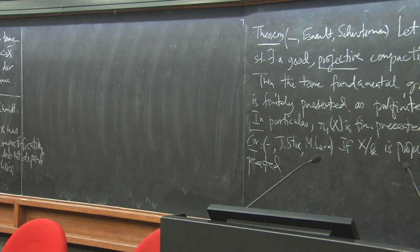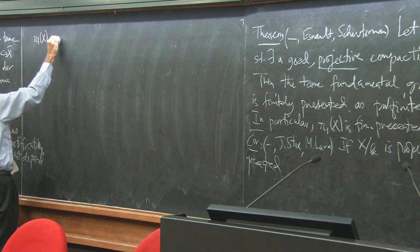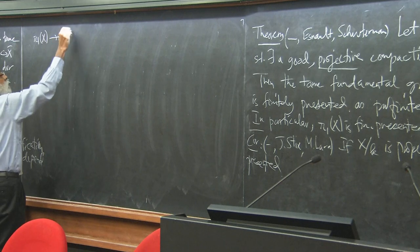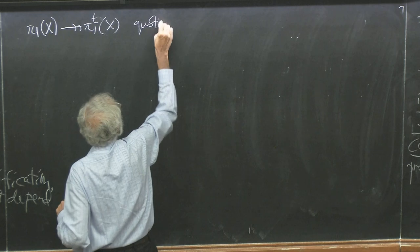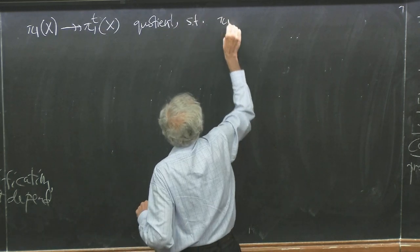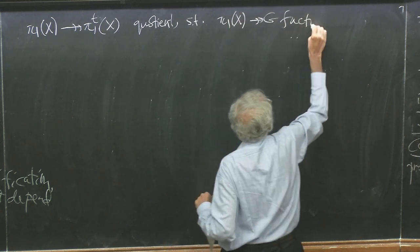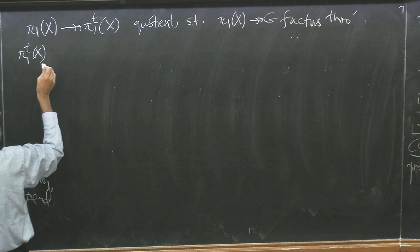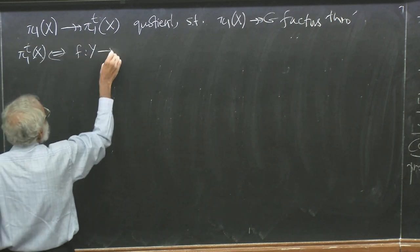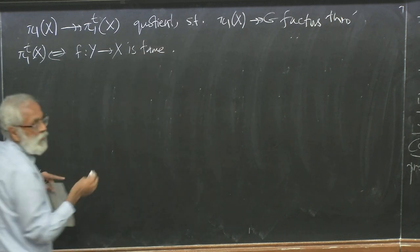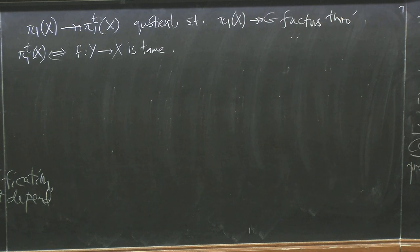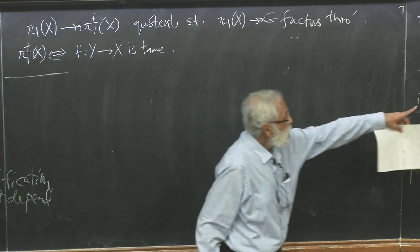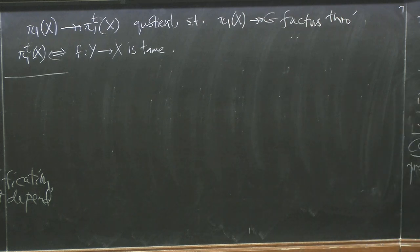So once I have a notion of tame covering, I automatically have a notion of tame fundamental group: π₁ᵗ is the quotient of π₁(X) such that a surjection π₁(X) → G factors through π₁ᵗ if and only if the associated cover Y → X is tame. Tame coverings are a proper subcollection of all coverings, there is an associated Galois category, and the fundamental group of that is the tame fundamental group. Our theorem is about this tame fundamental group of a smooth variety X with a good projective compactification.